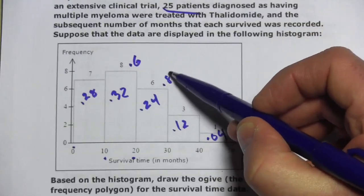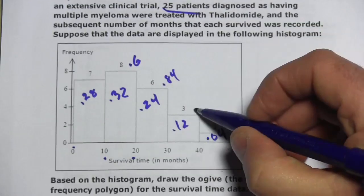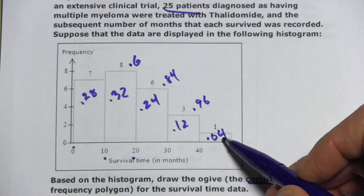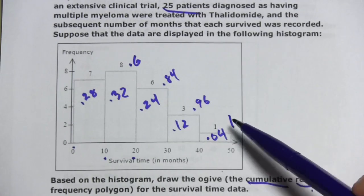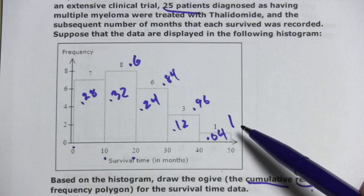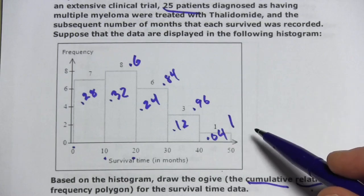And then add another 0.24, we're at 0.84. Add another 0.12, we're at 0.96. And then add 0.04, we get to 1. When you do a cumulative relative frequency, you should end on 1. If you don't, you've made a mistake somewhere along the way.